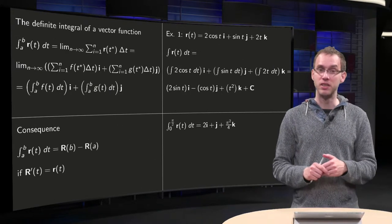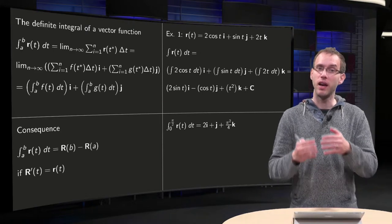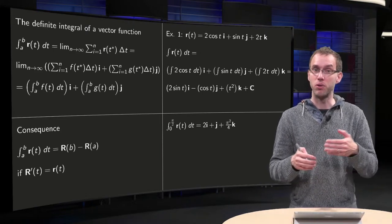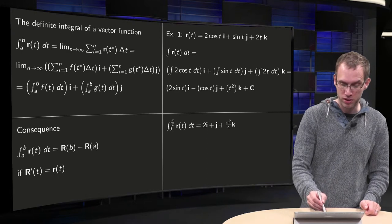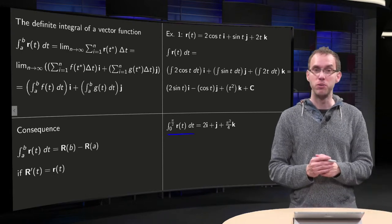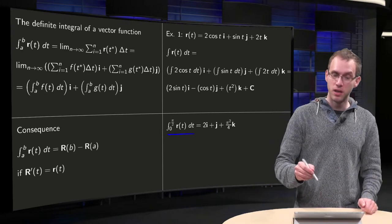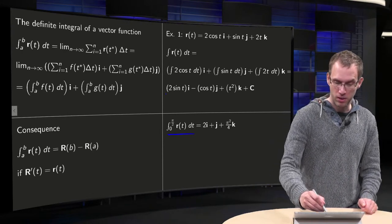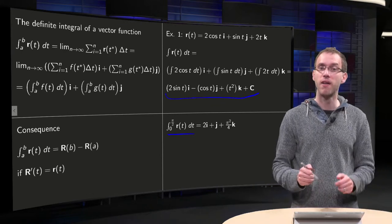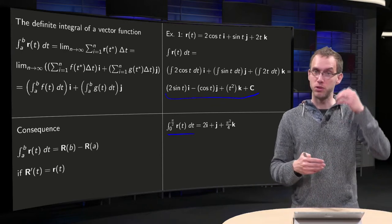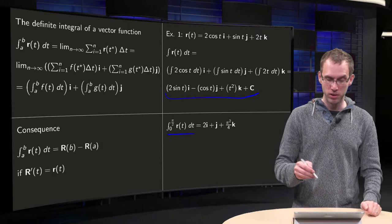If you have this indefinite integral, you can also compute a definite integral. If you integrate for example from 0 to π/2, what do we need to do? You just plug in the boundary values in your antiderivative. The constant drops out of course because you do upper boundary minus lower boundary.